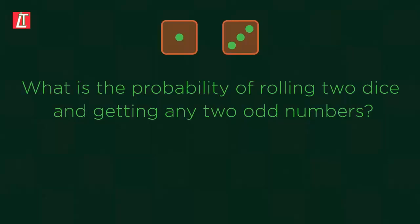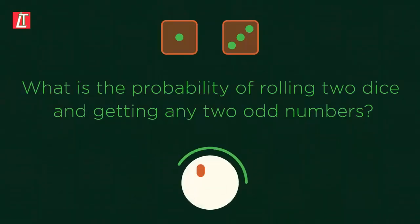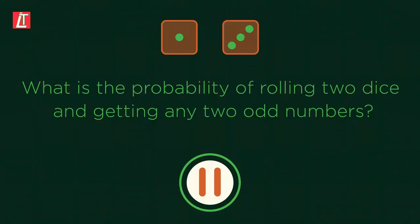What's the probability of rolling two dice and getting any two odd numbers? Pause the video here if you would like to have a go at working it out yourself.